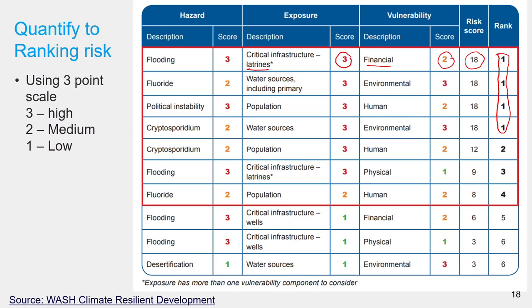Sometimes we tend to mix them. For example, knowing the environment is highly vulnerable to desertification, we may score the desertification hazard as high — but this is wrong. When scoring the hazard, we should only focus on the magnitude and probability that defines the hazard. Also note that certain hazard events — for example flooding — may be listed more than once in this table, because the same hazard may trigger different exposures and vulnerabilities. In this example, flooding exposes latrines as well as wells, and exposure of latrines to flooding relates to both financial and physical vulnerabilities.